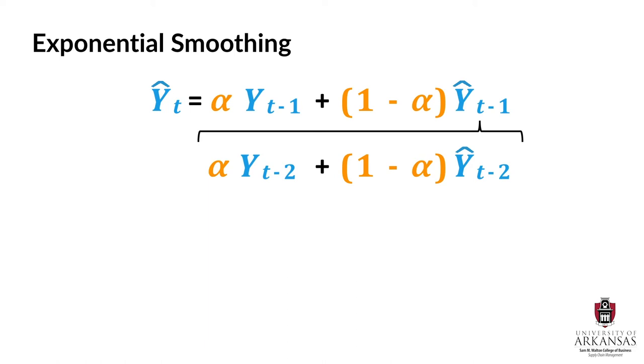Now let me rewrite this. So our forecast will be based on demand in the immediately preceding period t minus 1 with a weight of alpha. Moreover, our forecast will also draw on actual demand in period t minus 2 with a weight of 1 minus alpha times alpha.